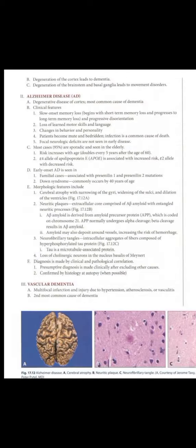Dementia and degenerative disorders: basic principles. These disorders are characterized by loss of neurons within the gray matter, often due to accumulation of protein which damages neurons. Degeneration of the cortex leads to dementia, while degeneration of the brain stem and basal ganglia leads to movement disorders.